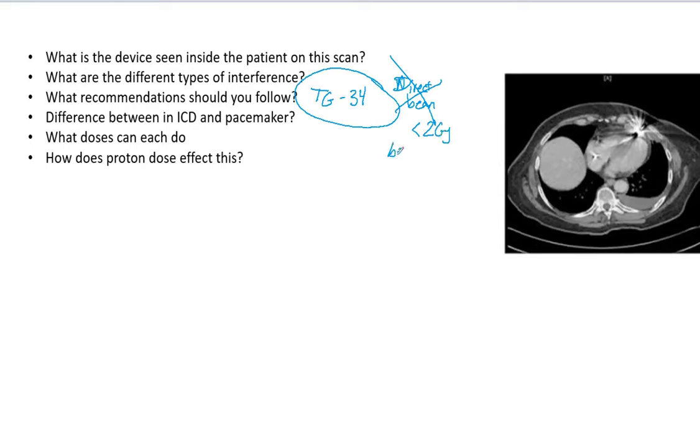First of all, you want beams below 10 MV and that's because of neutron production. You also want to avoid any type of wedges. So those are the recommendations that are ideal for you to follow. Follow TG34 as well.